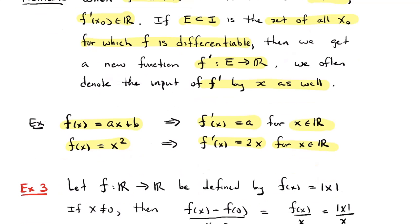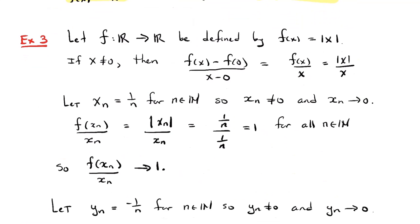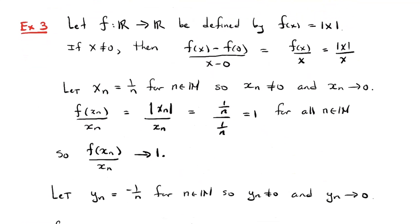This derivative, this f prime, is what I want to study carefully in chapter seven — basically proving all those things that you learned about it in Calc 1. Let's look at an example of a function that fails to be differentiable. Let's take the function defined on the whole real line by the absolute value of x.